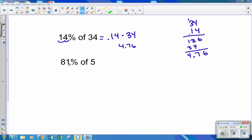This one, 81% of 5. It's still the same thing. Move it two decimal spaces. So 0.81 of 5 means times 5. 5 times 1 is 5, 5 times 8 is 40. Two decimal spaces. So I count two decimal spaces and I find out 4.05 is 81% of 5.